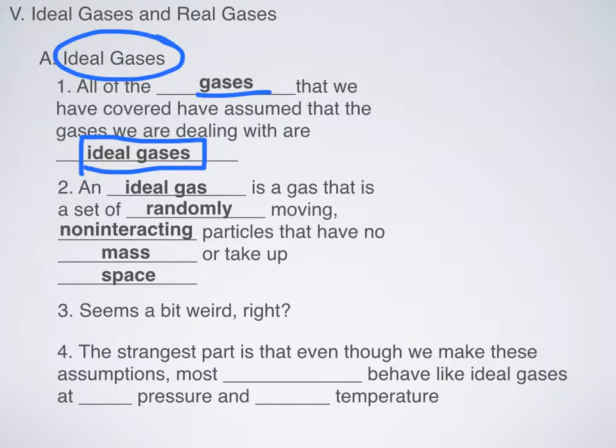So here's the definition of an ideal gas. It is a set of randomly moving, non-interacting particles that have no mass and take up no space. So in other words, ideal gases are impossible.